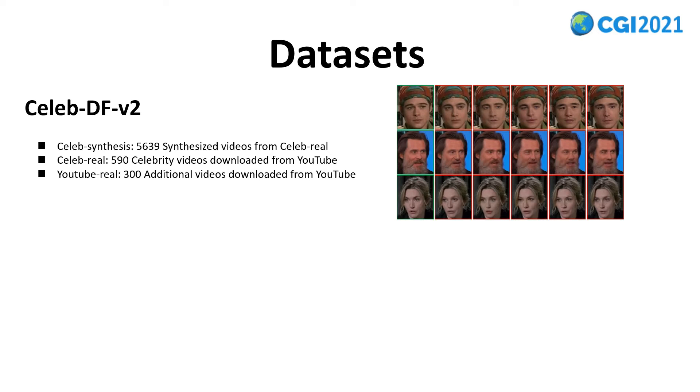The first one is Celeb-DF-v2, in which images are manipulated by deepfakes. It is a second-generation deepfakes dataset, containing 5,639 high-quality deepfake videos, 519 real videos, and 300 YouTube videos.